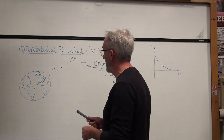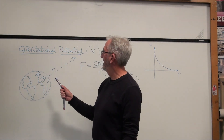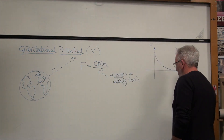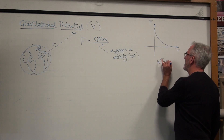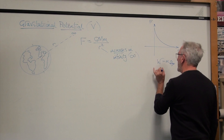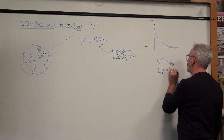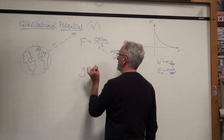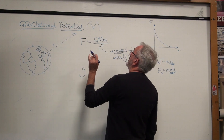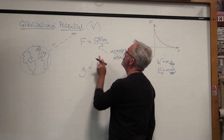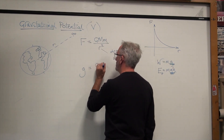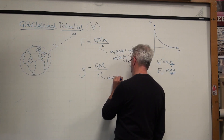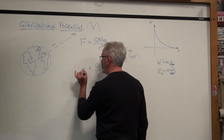What we now have to talk about is how much work you have to do to move an object around in a gravitational field. We've got issues with using W equals Fd, because g is not constant. We've got issues with using EP equals mgh, because g is not constant — g is changing. The gravitational field strength is the force per unit mass. So if that mass there was one kilogram, this equation becomes GM over R squared. And again, if R increases to infinity, then g will decrease to zero.